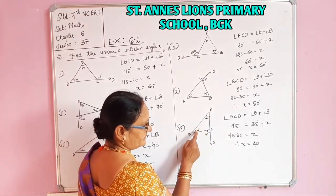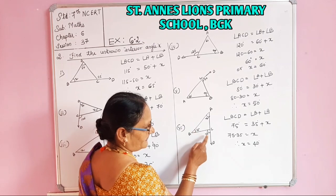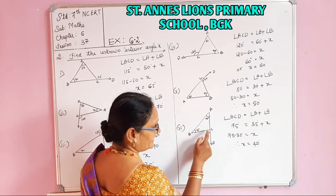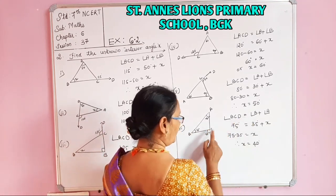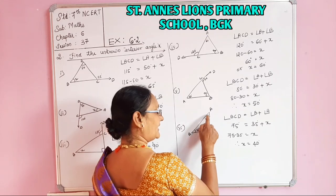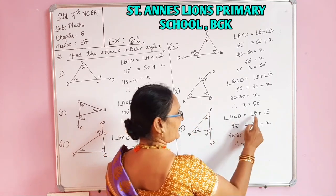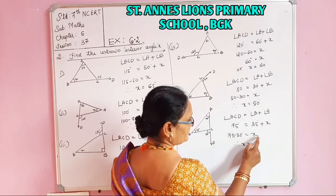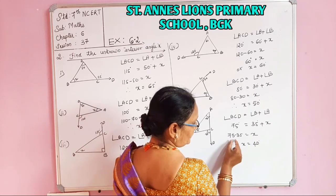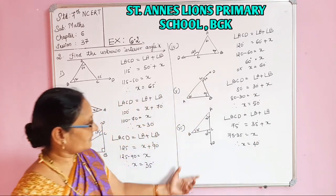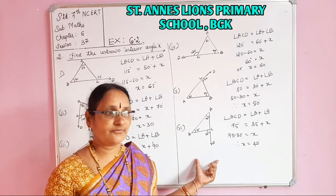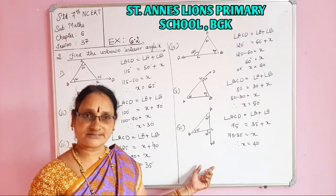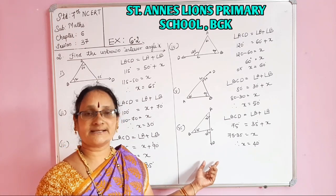The sixth problem: interior angle is X, the other angles are 35 and 75. The exterior angle VCD is equal to its opposite angles Angle A plus Angle B. So 75 equals 35 plus X. Therefore X equals 75 minus 35, which is 40 degrees. This completes Exercise 6.2, Second part.